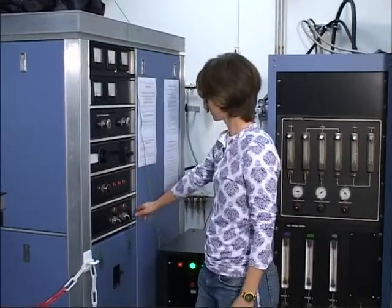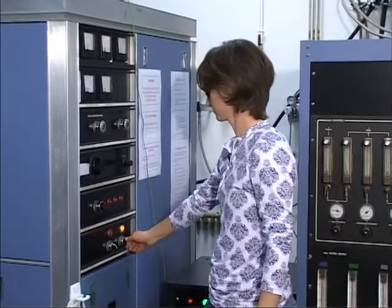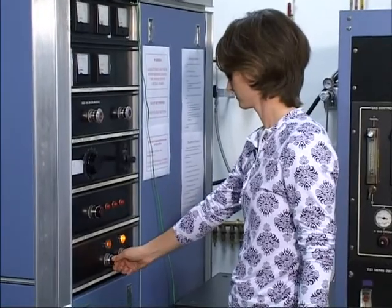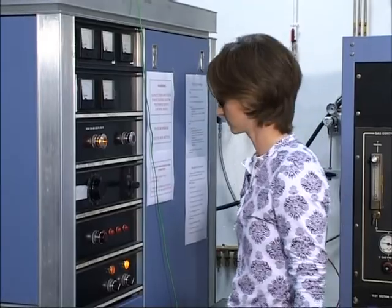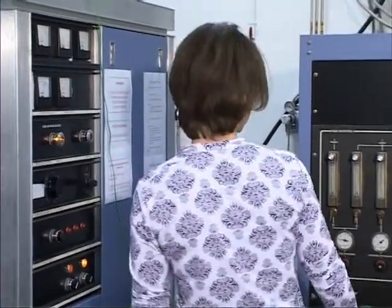To start the torch itself, we turn on the power supply, start the cooling water flow, and turn on the oscillator tube. While waiting for the power supply to warm up, we start the flow of argon through the coil.